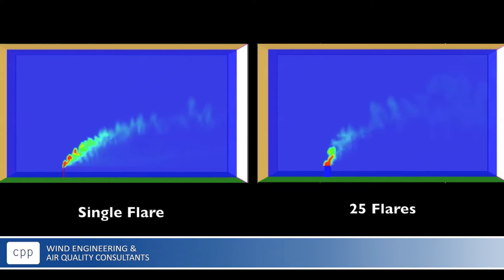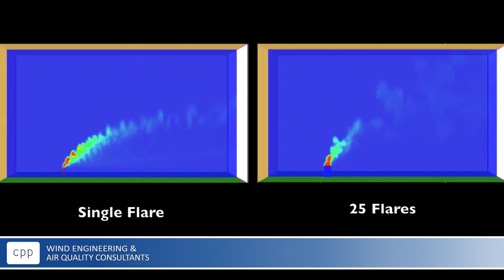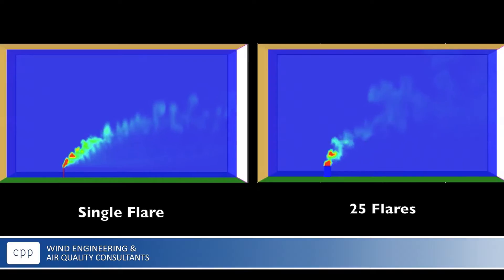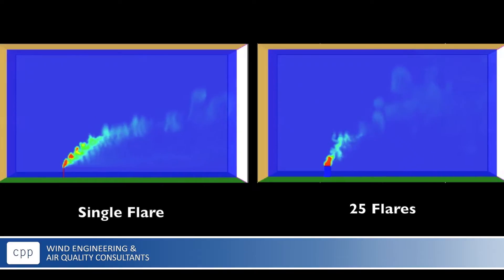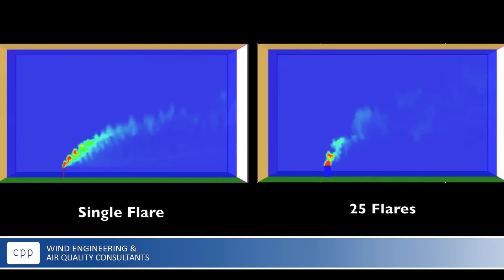The traditional way of modeling flares is outdated and inadequate for most cases, and traditional input parameters only predict the plume rise for a single flare. In cases with multiple flares in close proximity to each other, the additional buoyancy and added plume rise from the nearby flares is not accounted for.